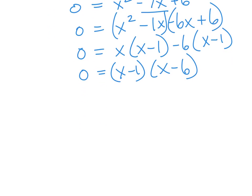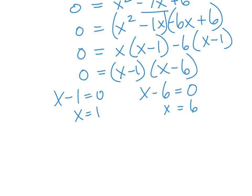Setting x minus 1 equal to 0 gives x equals positive 1, and setting x minus 6 equal to 0 gives x equals positive 6. Then we perform a check to see which of these — or if both — are the correct solution.